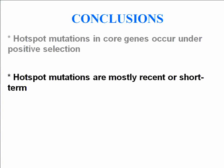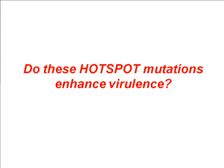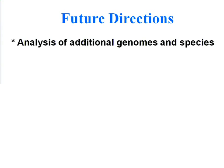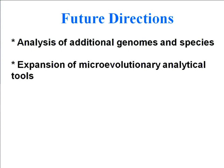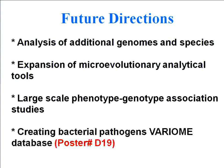So E. coli requires a large number of recent or short-term mutations to adapt to extra-intestinal habitats. The summary conclusions are: hotspot mutations in E. coli core genes occur under positive selection; hotspot mutations are mostly of recent or short-term origin; and they accumulate more frequently in pathogens — especially extra-intestinal ones — than in non-pathogens. An important future question is whether these hotspot mutations enhance virulence. As future directions, we continue analysis of additional E. coli genomes — currently 80-plus genomes in hand. We are also analyzing other species such as Salmonella, Yersinia, and Streptococcus, expanding our microevolutionary analytical tools, and performing phenotype-genotype association studies. We are also creating a bacterial pathogen varium database to curate all genetic variations in a species population, with the E. coli varium project currently underway.